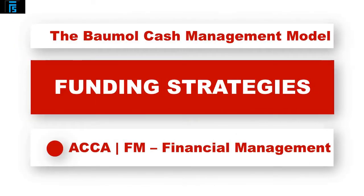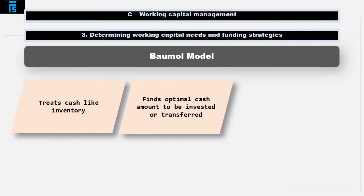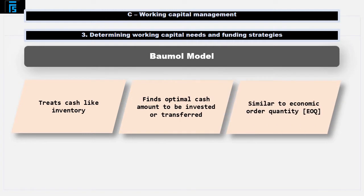The Baumol Cash Management Model treats cash like inventory and finds the optimal cash amount that should be invested or transferred at any one time. This is similar to the economic order quantity used for inventory management.